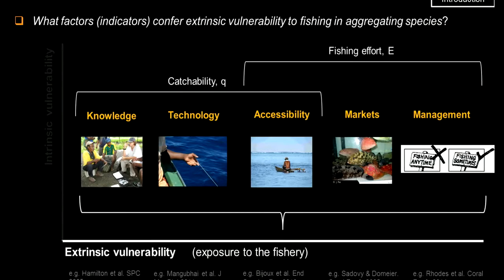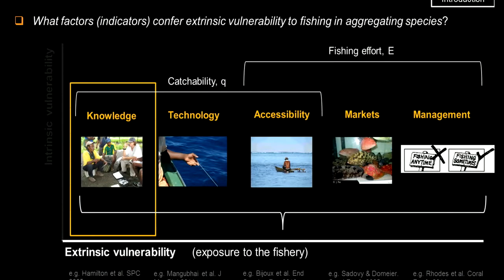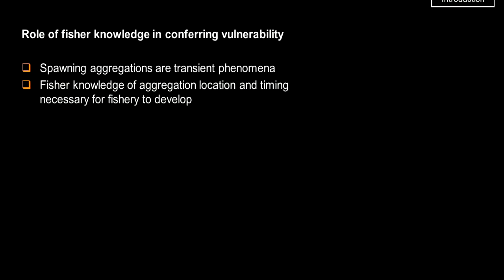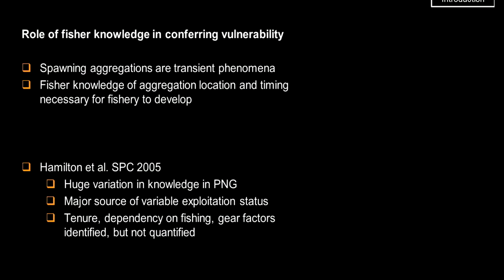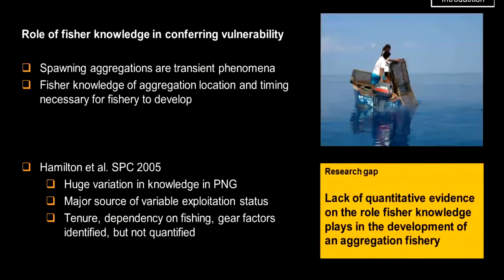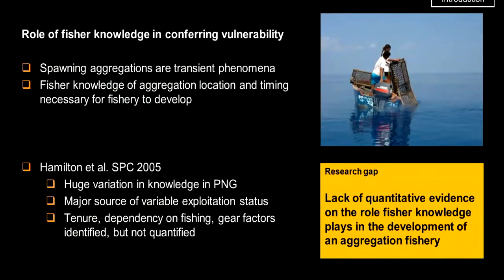Another focus of my PhD is fisher knowledge. The role of fisher knowledge in conferring vulnerability is important because spawning aggregations are very transient — they form and disperse, so fishers need good knowledge on timing and location. Research in Papua New Guinea by Richard Hamilton from TNC found huge variation in knowledge across provinces and proposed that was the major source of variable exploitation status, attributed to tenure, dependency on fishing, and gear factors. However, these were not quantified, identifying a research gap on the quantitative evidence for fisher knowledge's role in the development of aggregation fisheries.